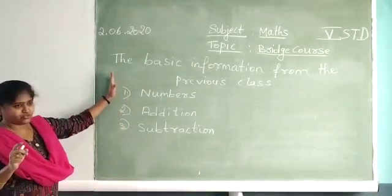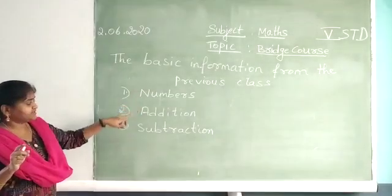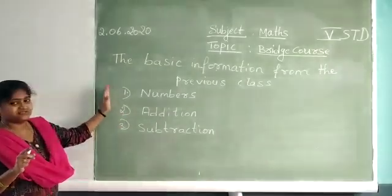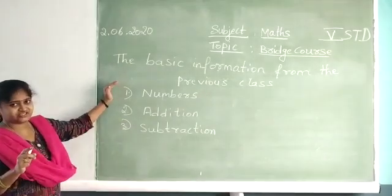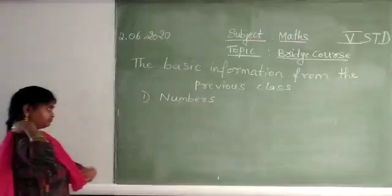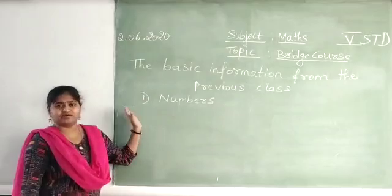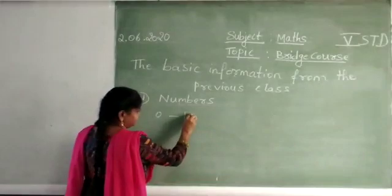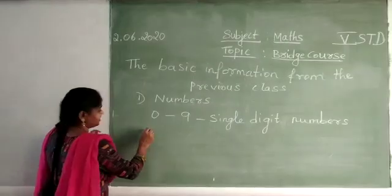So once again, under Bridge Course, today you are going to learn numbers, addition, and subtraction. So in this screen, first let us go through numbers in detail. Everybody knows about numbers. You can start from 0 to 10, or from 11 to some larger number.